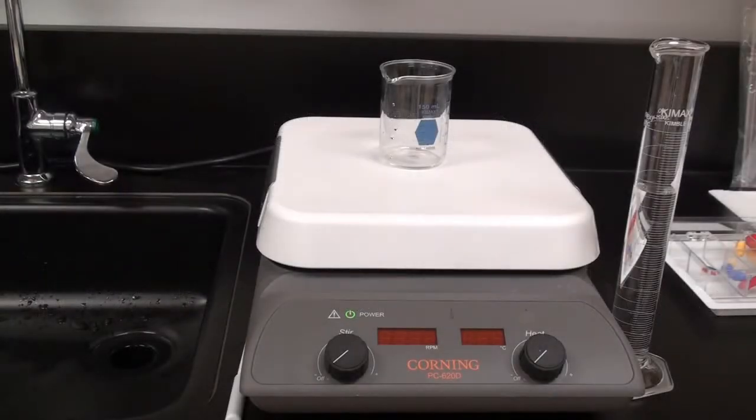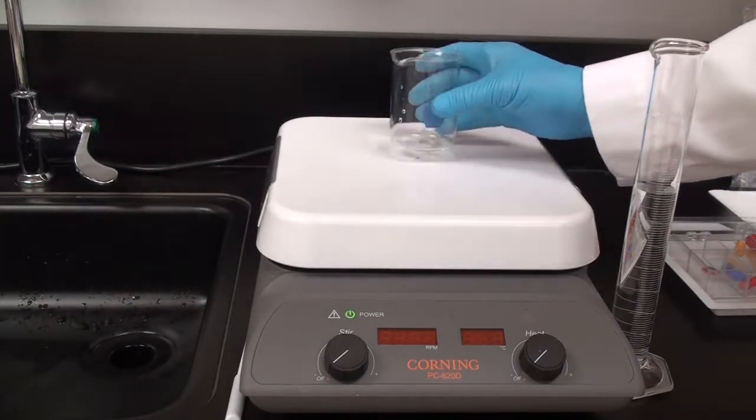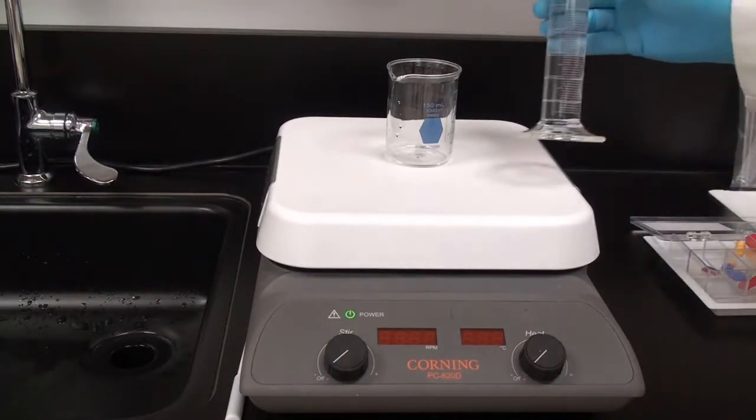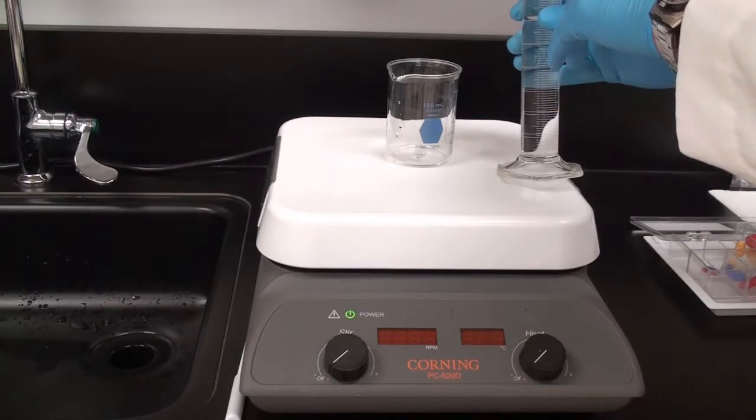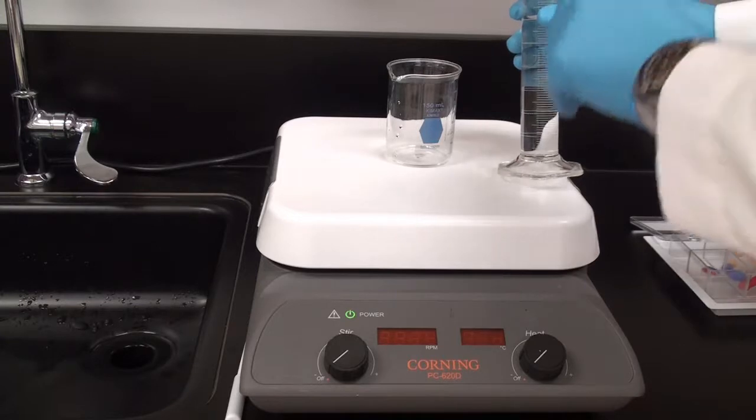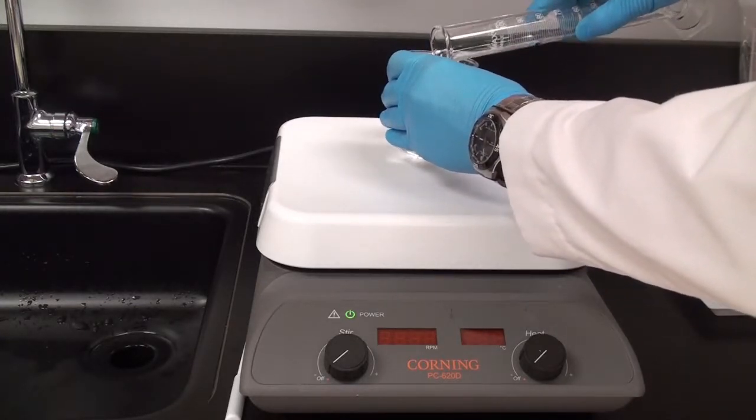The first thing I'm going to do is heat up some water to 60 degrees. I'm measuring 75 milliliters and I'm going to pour it into here and warm that up, mix the solution totally, and then QS it to 100 milliliters when I'm done.